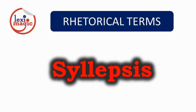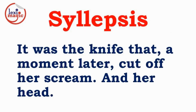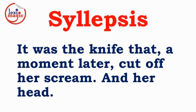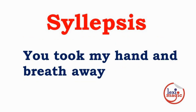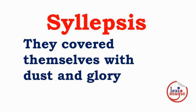Syllepsis is a figure of speech where a word can be applied to different components of a sentence, also known as Zeugma. From Robert Bloch's Psycho: 'It was the knife that a moment later cut off her scream and her head.' E.B. White: 'When I address Fred, I never have to raise either my voice or my hopes.' Other examples: 'You took my hand and breath away.' 'They covered themselves with dust and glory.'